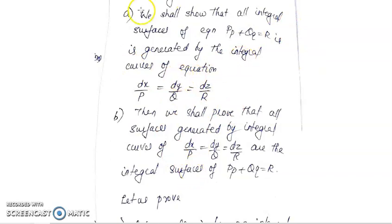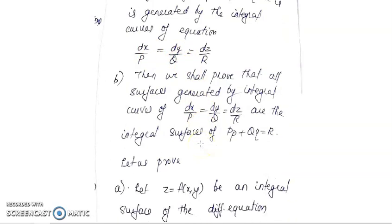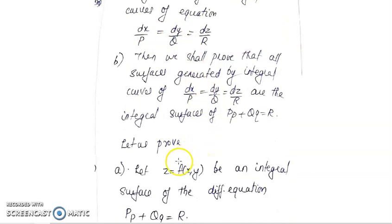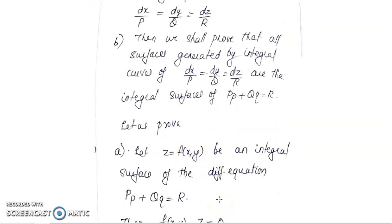We will see the first case. First we will prove that all integral surfaces are generated by the integral curves of the equation dx/P equal to dy/Q equal to dz/R. We will start with an integral surface of the equation Pp plus Qq equal to R. Let me take z equal to f(x,y) to be an integral surface.